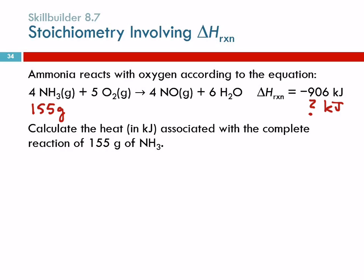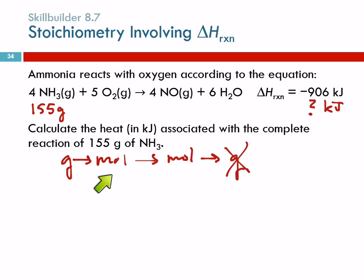What's our normal path for stoichiometry? Grams to moles to moles to grams. But here we're starting with a mass and ending with kilojoules, so grams at the end won't work. I can go from grams of ammonia to moles of ammonia using the molar mass. Then I can go directly to kilojoules of energy using delta H — I don't need to convert to moles of anything else.